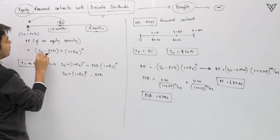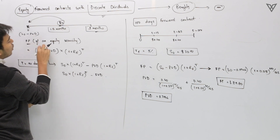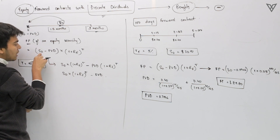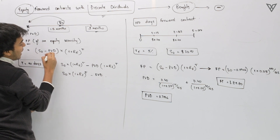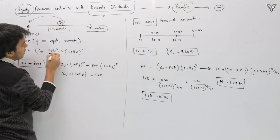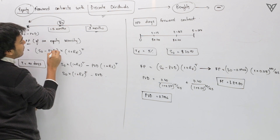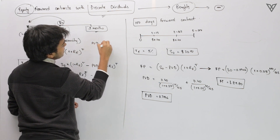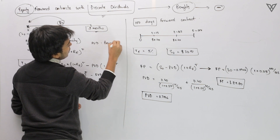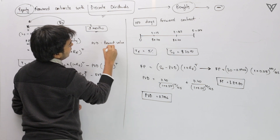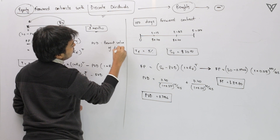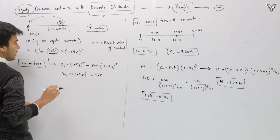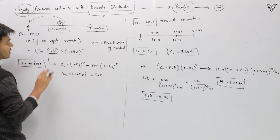The formula is pretty simple. To calculate the forward price of an equity security where we have dividends involved, we start with the spot price and subtract the PVD — the present value of dividends — and then multiply by (1 + rf)^T. Quite simple and easy to understand.